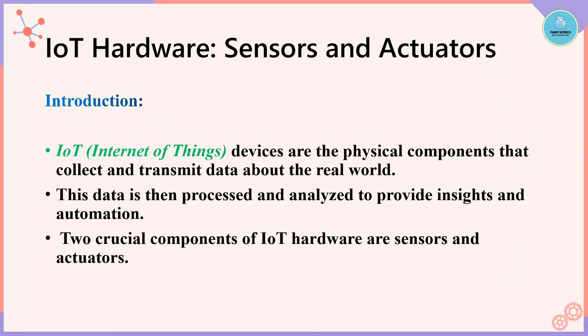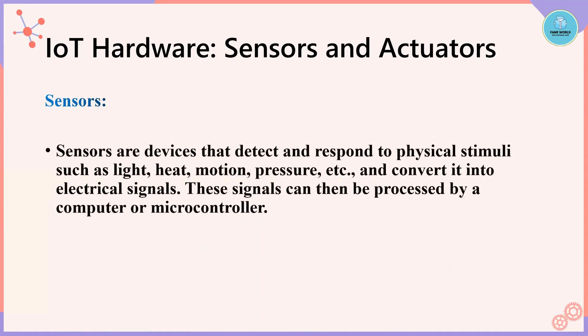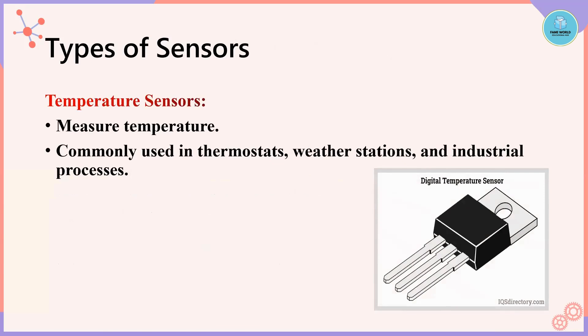Two crucial components of IoT hardware are sensors and actuators. Sensors are devices that detect and respond to physical stimuli such as light, heat, motion, pressure, etc. They convert these into electrical signals that can be processed by computers or microcontrollers.